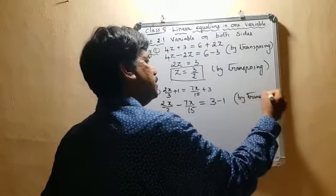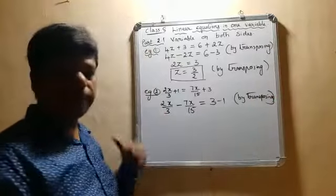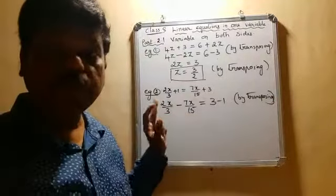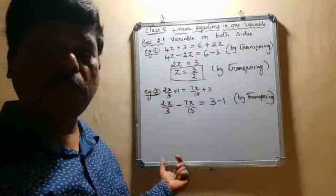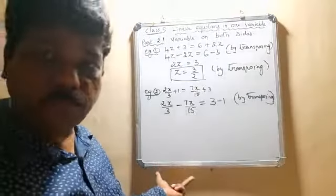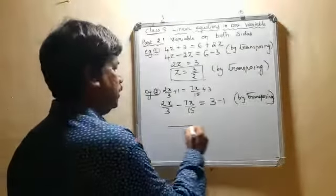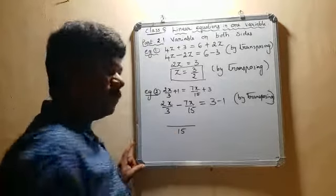Once we have done this much, now start solving it. Here, there are two different denominators, 3 and 15. The LCM of 3 and 15 is 15. Finding the LCM, we will see that 15 is the LCM.